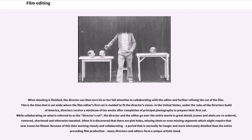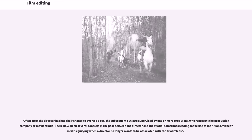Often after the director has had their chance to oversee a cut, the subsequent cuts are supervised by one or more producers, who represent the production company or movie studio. There have been several conflicts in the past between the director and the studio, sometimes leading to the use of the Alan Smithee credit, signifying when a director no longer wants to be associated with the final release.